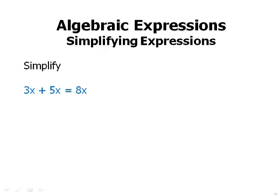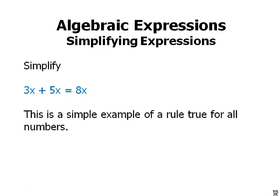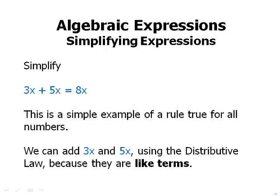Now let's think about this for a minute. We've said one expression, 3x plus 5x, is equal to another expression, 8x. So what we're saying here is we have a rule that's true for all numbers. Every single number on the number line would obey this particular rule. And of course we can add 3x plus 5x using the distributive law because they are like terms.